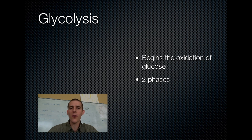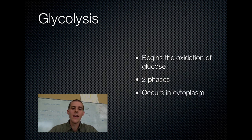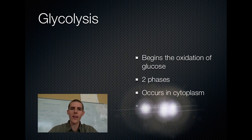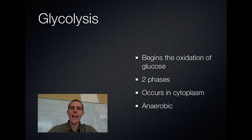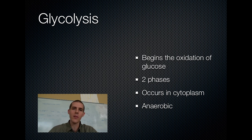Glycolysis happens in two phases — in one phase you're investing energy, in the other you're getting energy out. It occurs in the cytoplasm, so its address is the cytoplasm, not inside any of the organelles. And finally, this is an anaerobic process, so it's going to happen whether there's oxygen or not. That's going to be different from the other processes of cellular respiration. Remember, glycolysis can happen whether or not there is oxygen.